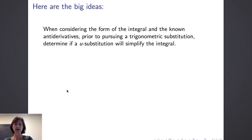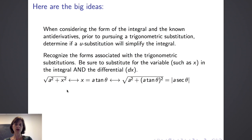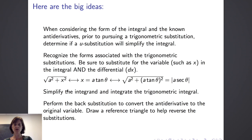In summary, the main ideas are: when considering the form of the integral and known antiderivatives, prior to pursuing a trig substitution you should consider a u substitution to see if that will simplify the integral first. Make sure you can recognize the forms associated with the trigonometric substitutions, and substitute not only for the variable but also for the differential. The form √(a²+x²) calls for x equals a tangent of theta, so that a²+x² under the radical becomes a² plus a tangent theta squared, simplifying to the absolute value of a secant theta. After substitution, simplify the integrand, integrate the resulting trigonometric integral, and perform back substitution using the reference triangle to convert the antiderivative back to the original variable.